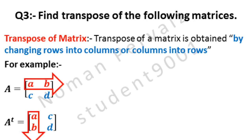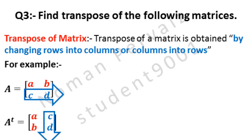By taking transpose, we have converted the 1st row into the 1st column and the 2nd row into the 2nd column. The 1st row, highlighted in red, contains elements A and B, which become the 1st column. The 2nd row, highlighted in blue, contains elements C and D, which become the 2nd column.